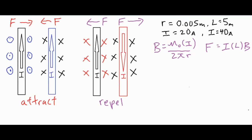We're going to choose one wire — it doesn't matter which one. Let's put some labels on these: 20 amps of current for one wire, 40 amps for the other. Each wire has a length of 5 meters, and their separation distance r is 0.005 meters, so they're pretty close to each other.